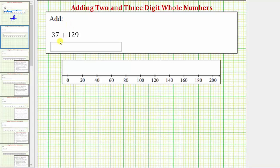We're asked to add 37 and 129 or find the sum of 37 and 129. The first step is to write the sum vertically and line up the corresponding place values. So we have 37 plus 129.